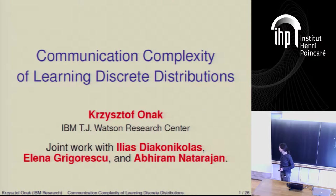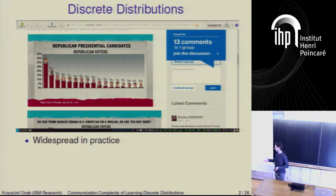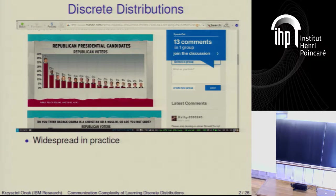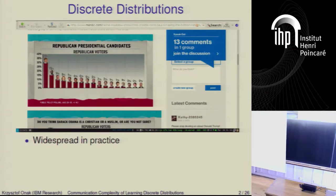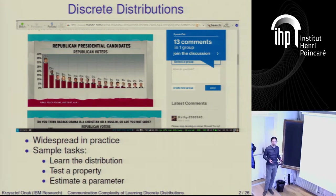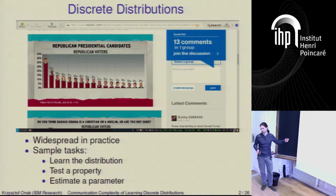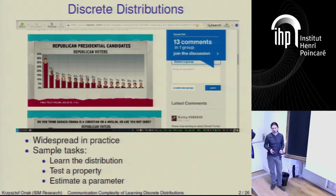Let me start from perhaps an obvious fact, especially after the previous talk where Graham talked a lot about discrete distributions. Discrete distributions are pretty common: whenever you have various samples, each sample has some probability, and this defines some discrete distribution over the space of samples. Given access to samples from a distribution, you might want to solve multiple kinds of problems. Perhaps the simplest one is you might just want to learn the distribution — you want to have some good approximation to what this distribution is.